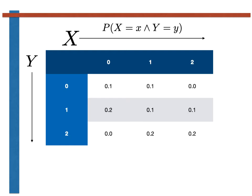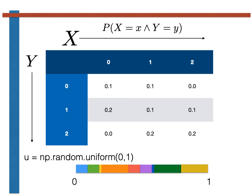We generate a uniform continuous random variable between 0 and 1. We then take that range between 0 and 1 and divide it up into segments that have lengths equal to the various probabilities in the table as shown here. If our uniform continuous random variable U falls within the blue segment, which has length 0.1, X and Y will be set equal to 1. If U falls within the green segment, X will be set equal to 1 while Y will be set equal to 0. We continue ascribing segments of the line to various probabilities in our joint probability mass function table.